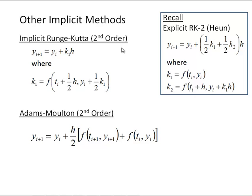So here's implicit Runge-Kutta, second-order Runge-Kutta. And here we would have an implicit method because we are saying y_{i+1} is equal to y_i plus k_1 h for Runge-Kutta, but k_1 is in terms of k_1. So here again, we are implicit.